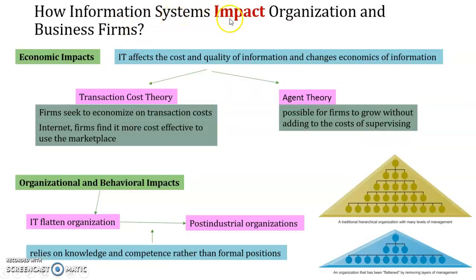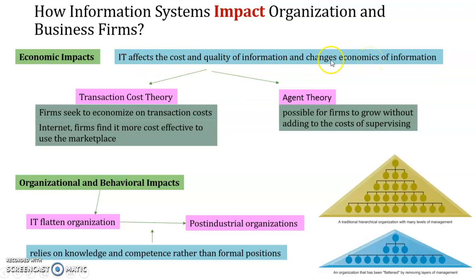How do information systems impact the organization and business firm? There are two impacts here. The first one is economic impacts, and the second one is organizational and behavioral impacts. For economic impacts, the idea is that it will affect the cost and quality of information and change the economics of information. There are two theories: transaction cost theory and agency theory.